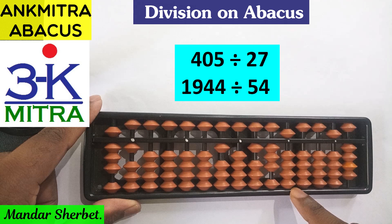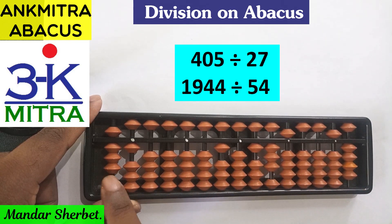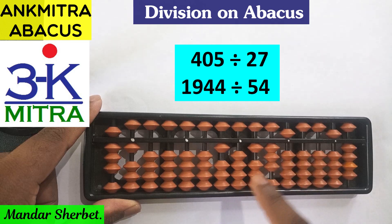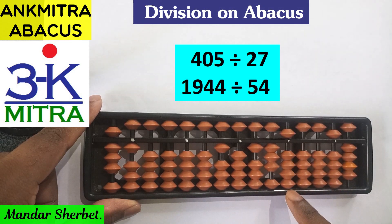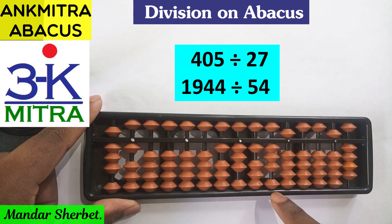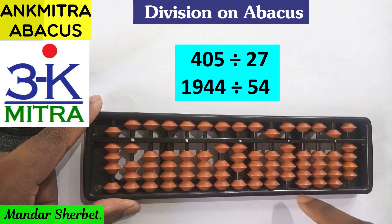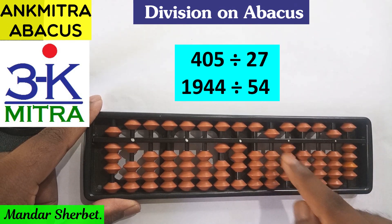Now moving to the next rod, the number we see up to this rod is 135. From 135, what can we subtract? We can see we can subtract 81, which is three times 27. So we take 3 on the answer set. Since 135 ends on the units-place rod, we place 3 on the units place of the answer set. Subtracting 81 from 135: plus 2 minus 10 for the tens, and plus 4 minus 5 for the units.